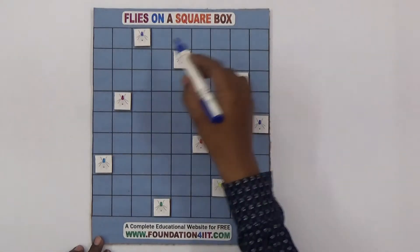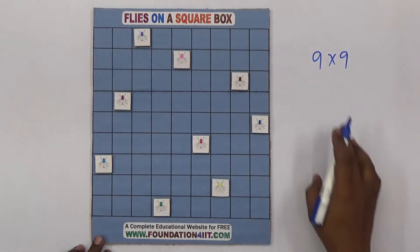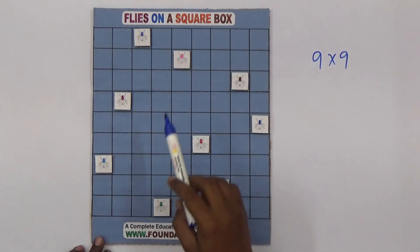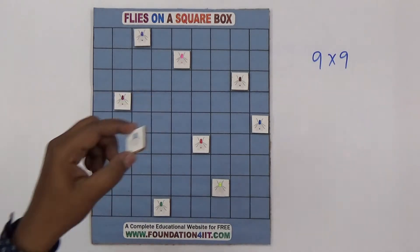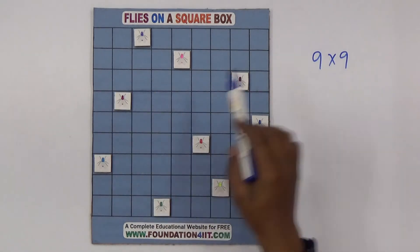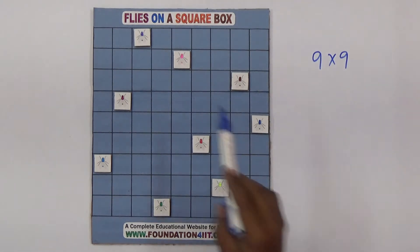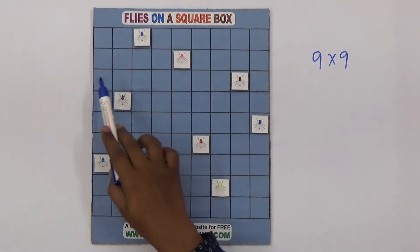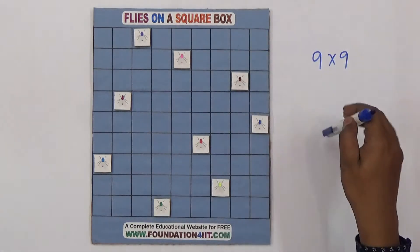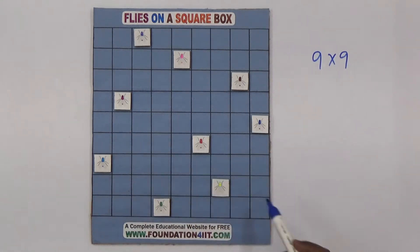If you observe this table, it has nine rows and nine columns — nine nines, 81 square boxes. I've arranged some flies using the cardboard. The condition is: in every row, every column, and even the diagonal, there is only one fly. So in the first row there's only one, second row, third row, and so on. Each fly is not attached to any other diagonally.